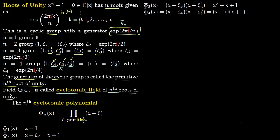The nth cyclotomic polynomial φₙ(x) is defined as the product over all primitive nth roots of unity of (x minus that root) — we take only roots which generate the group, not all roots. For example, φ₁(x) = x - 1, since for n=1 only 1 is in the group. For φ₂(x): ζ₂ = e^(2πi/2) = -1, so φ₂(x) = x - (-1) = x + 1.